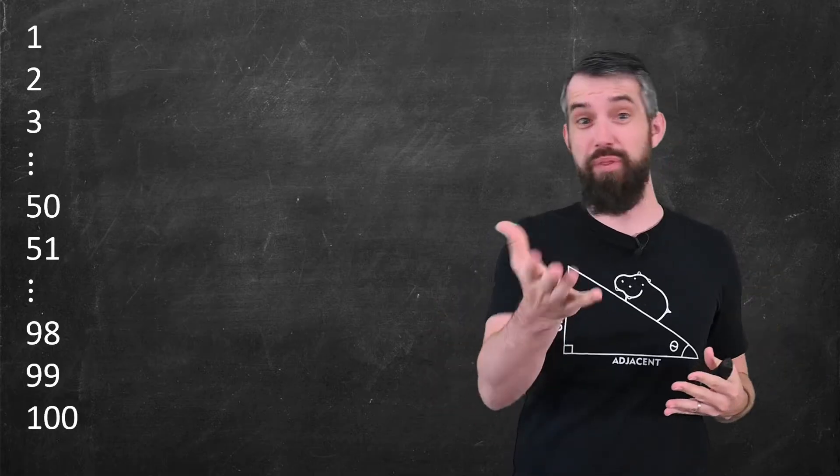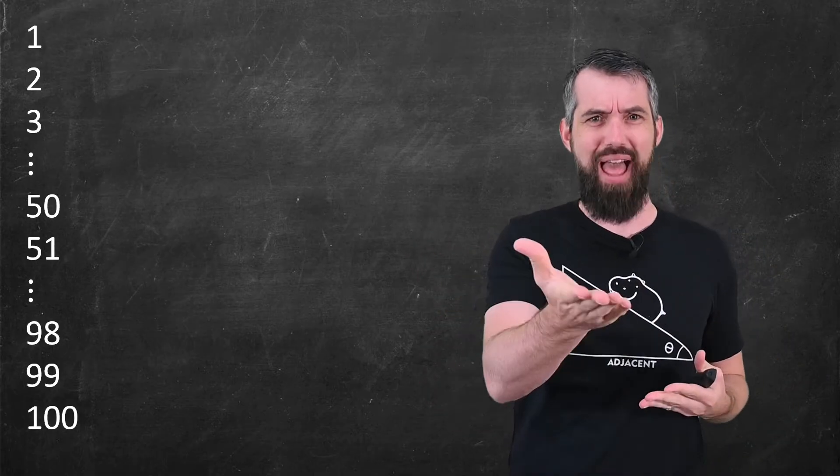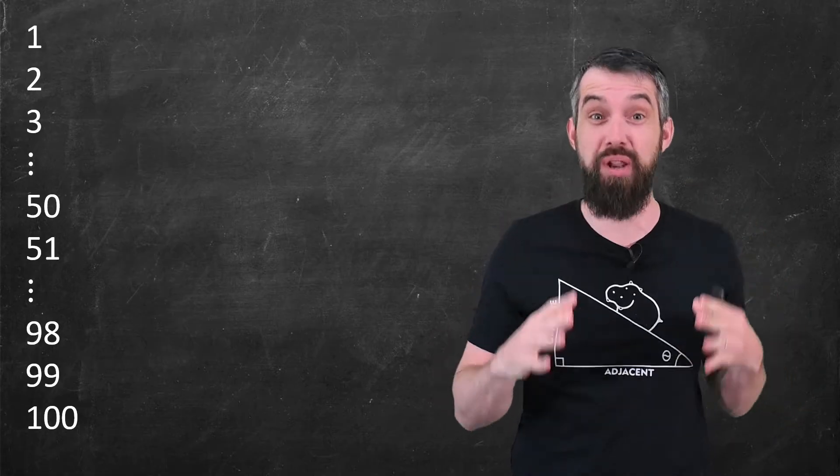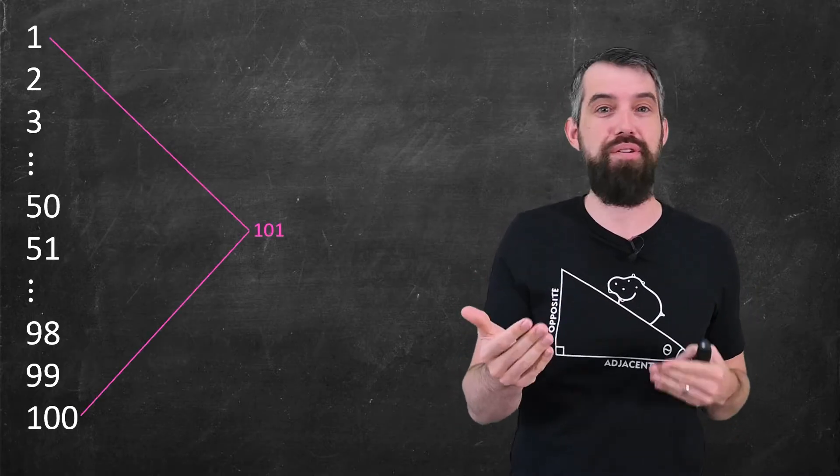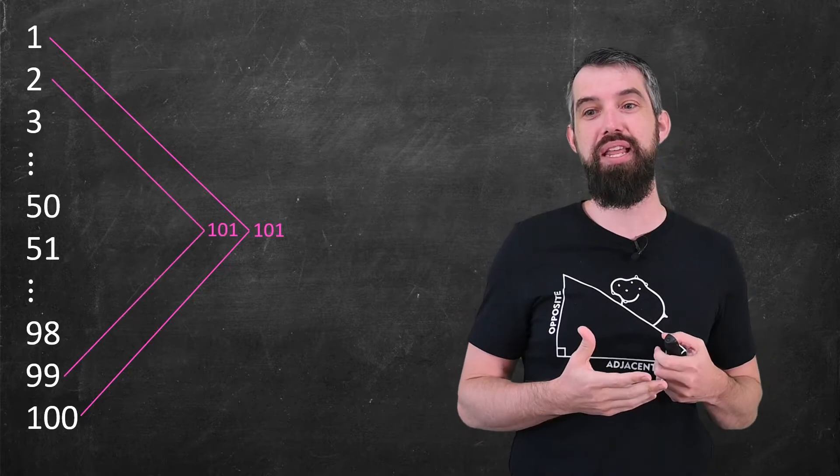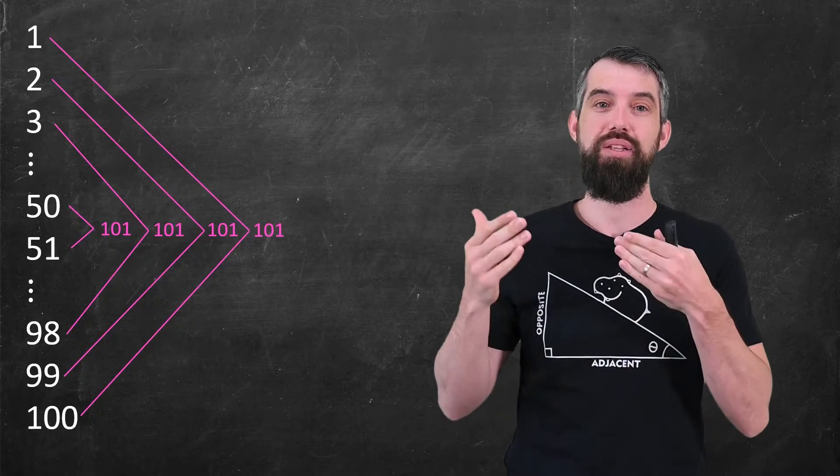There's an infamous story about the great polymath Gauss, who was able to, in elementary school, add up 1 to 100, using basically this exact same trick incredibly quickly. And what he did was notice that the first and last number, 1 and 100, adds up to 101. As does 2 and 99. As does 3 and 98. All the way down to the middle, where 50 and 51 also add up to 101.